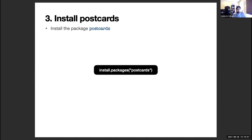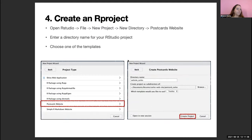Okay, looks like we're good to go. Josh, give us a thumbs up. Great. Now that we install the package, we want to create an R project. Go into RStudio: File > New Project > New Directory, and we will find an option that says Postcards Website. Then we'll enter a directory name for our RStudio project and choose one of the templates.